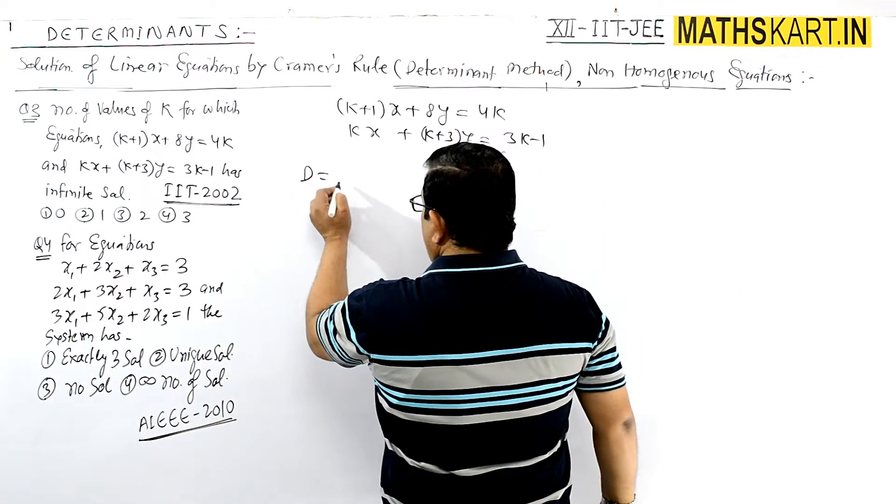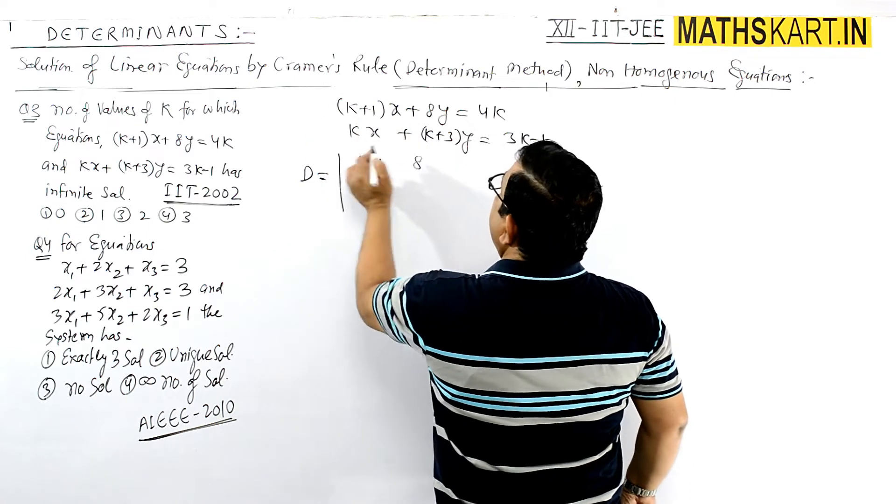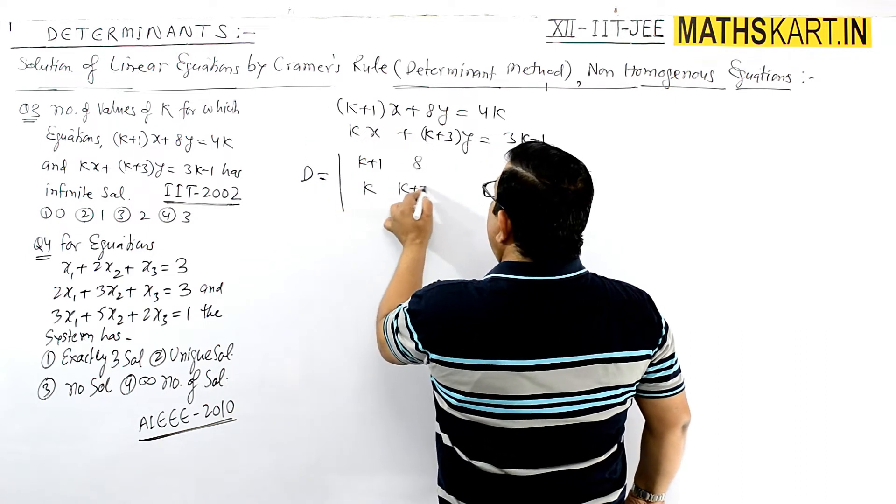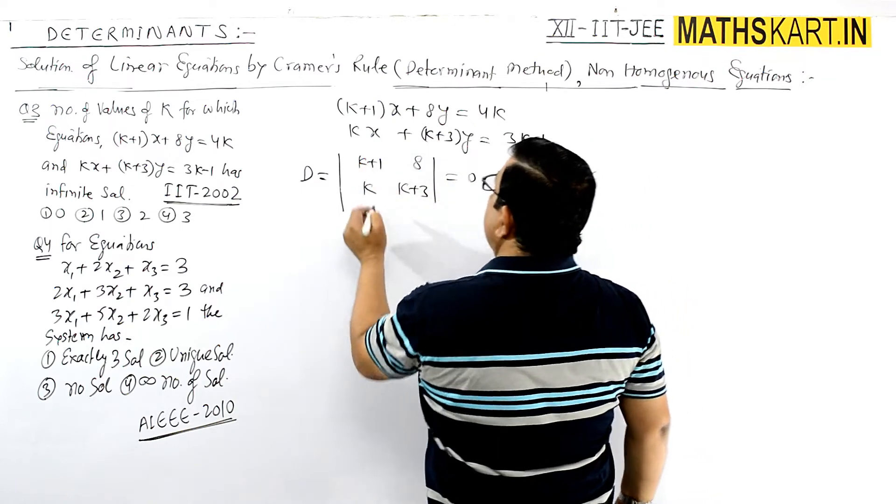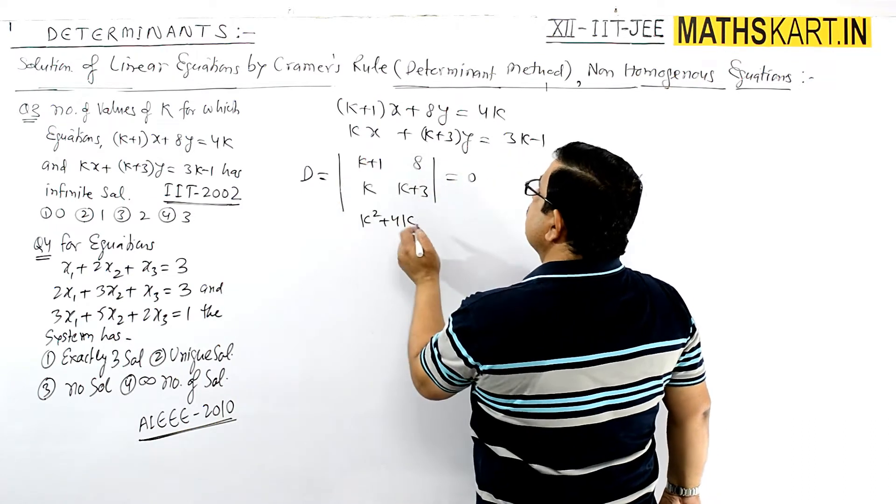For D, we have the determinant |k+1, 8; k, k+3| = 0. This gives (k+1)(k+3) - 8k = 0, which expands to k² + 4k + 3 - 8k = 0, simplifying to k² - 4k + 3 = 0.